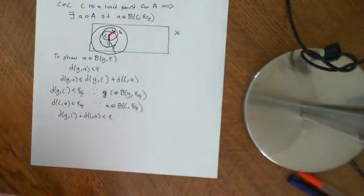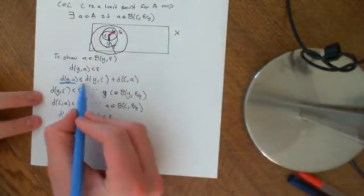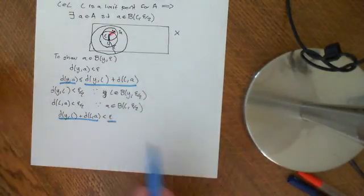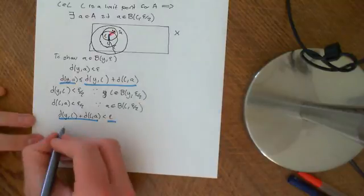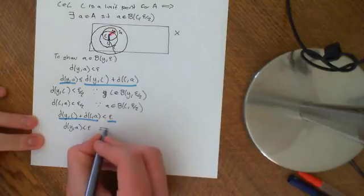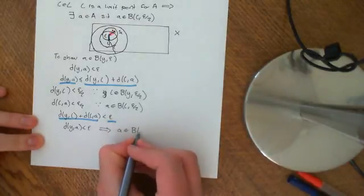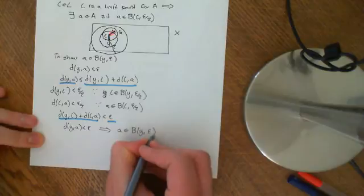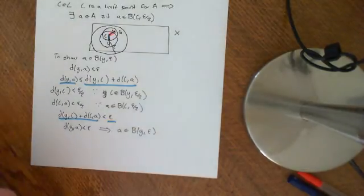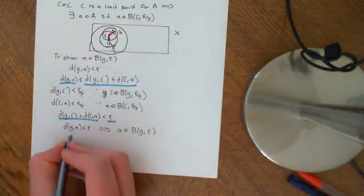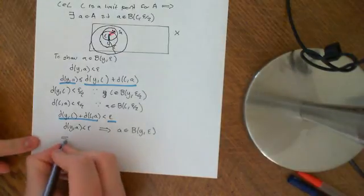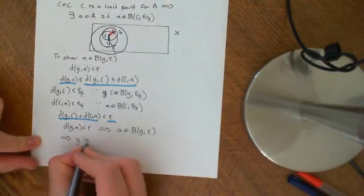By transitivity, this implies that the distance between Y and a is less than epsilon, so a is an element of the open ball around Y of size epsilon. Whatever epsilon you give me, I can find you an element little a of big A which is within that ball, which implies Y is a limit point of A.